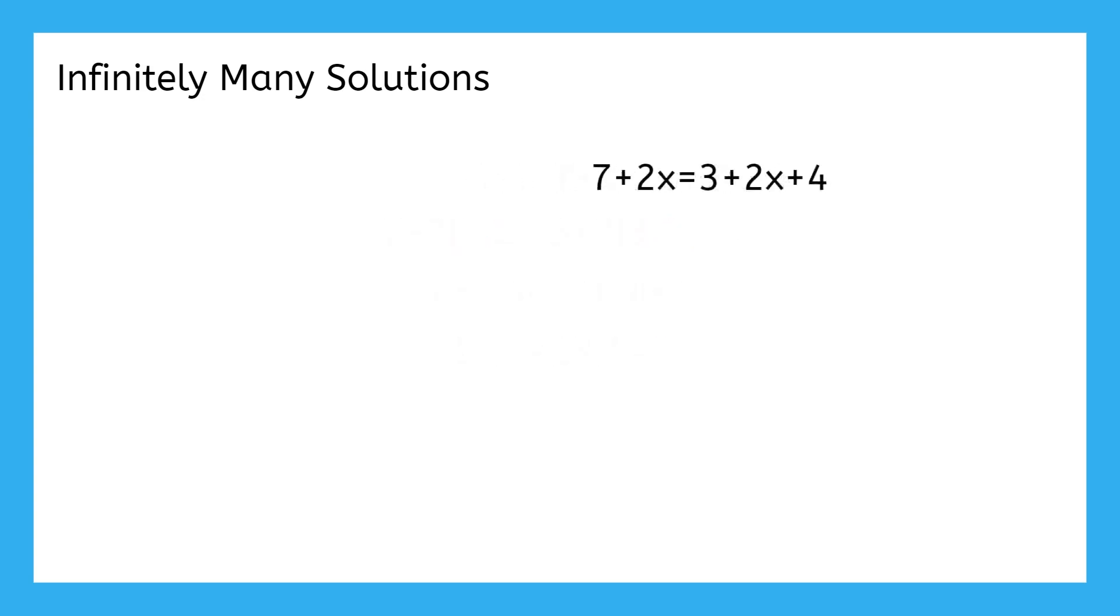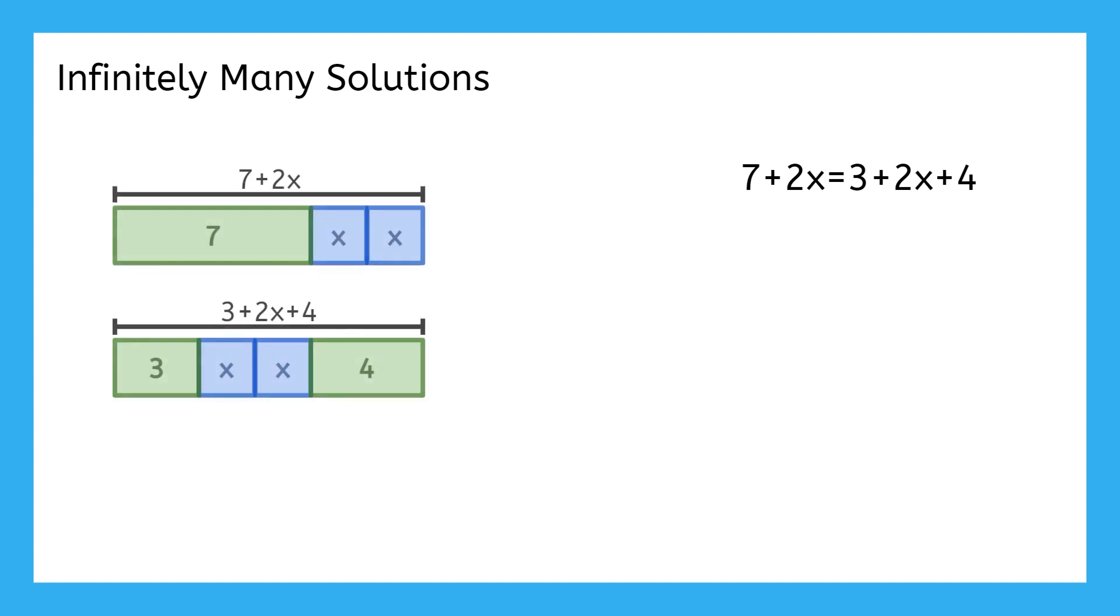But what's actually happening here? Well, each side of this equation is made up of constants and variables. In the GeoGebra, you saw them represented like this. But if we do a little rearranging here to put all of the constants together at the front and all of the variables together at the end, we can see what's happening here a little better.